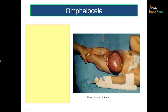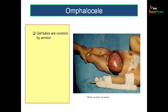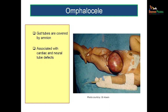Before moving on to the topic proper, let us see a clinical scenario. This baby is born with a huge mass at the umbilical region, and this condition is known as omphalocele. Omphalocele means you have the gut tubes lying outside the abdominal cavity, and this is covered by amnion. Usually this condition is associated with cardiac and neural tube defects.